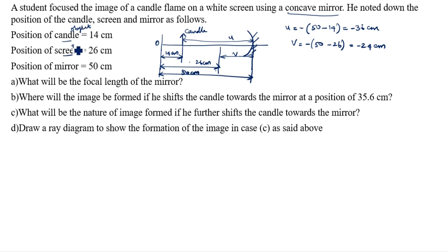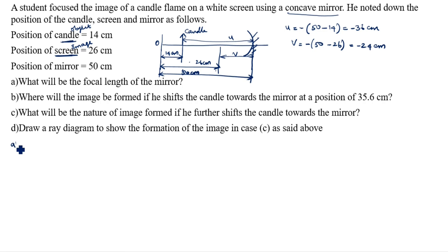The screen is the image — we only see the image on the screen. The candle is the object. Don't confuse the u and v values. We have u and v now. For part (a), we need to find the focal length of the mirror. The formula is: 1/f = 1/v + 1/u.